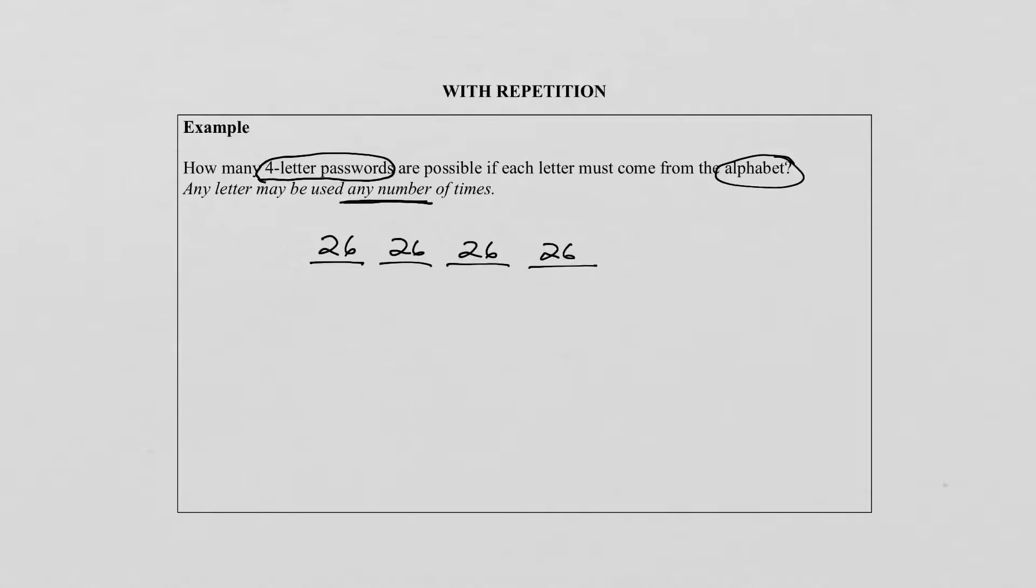So why is this the case? Because the letters may repeat. You can use them any number of times. It means if the first letter for instance is an H, we can use an H again. And that is why it is 26 again.